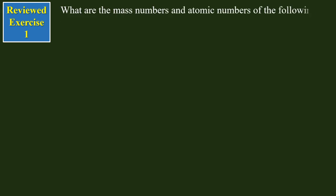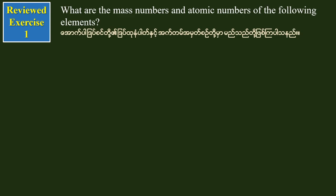What are the mass number and atomic number of the following elements? The mass number and atomic number of Pb-206 is: atomic number 82 and mass number 206. For uranium-235, the atomic number is 92 and the mass number is 235.